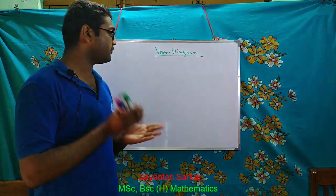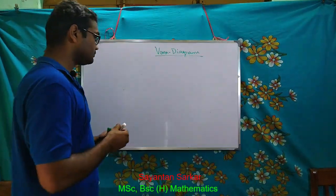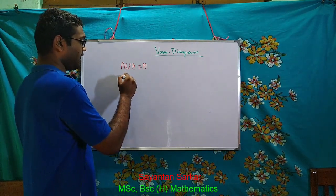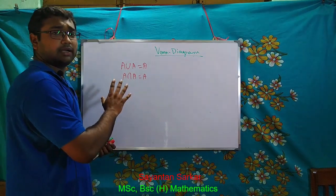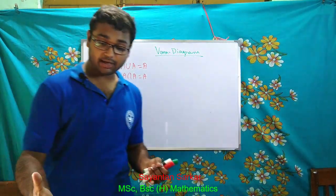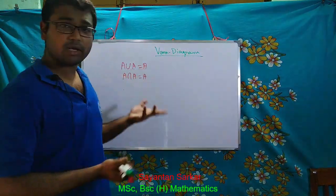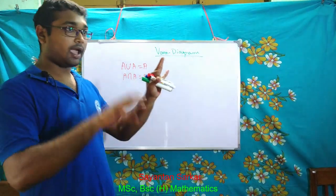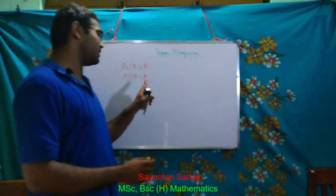The first formula is the idempotent law: A union A equals A, and A intersection A equals A. A union A means taking elements of A and combining them — we get A only, since no other elements are added. And A intersection A means taking the common part of A with itself — which is obviously A.